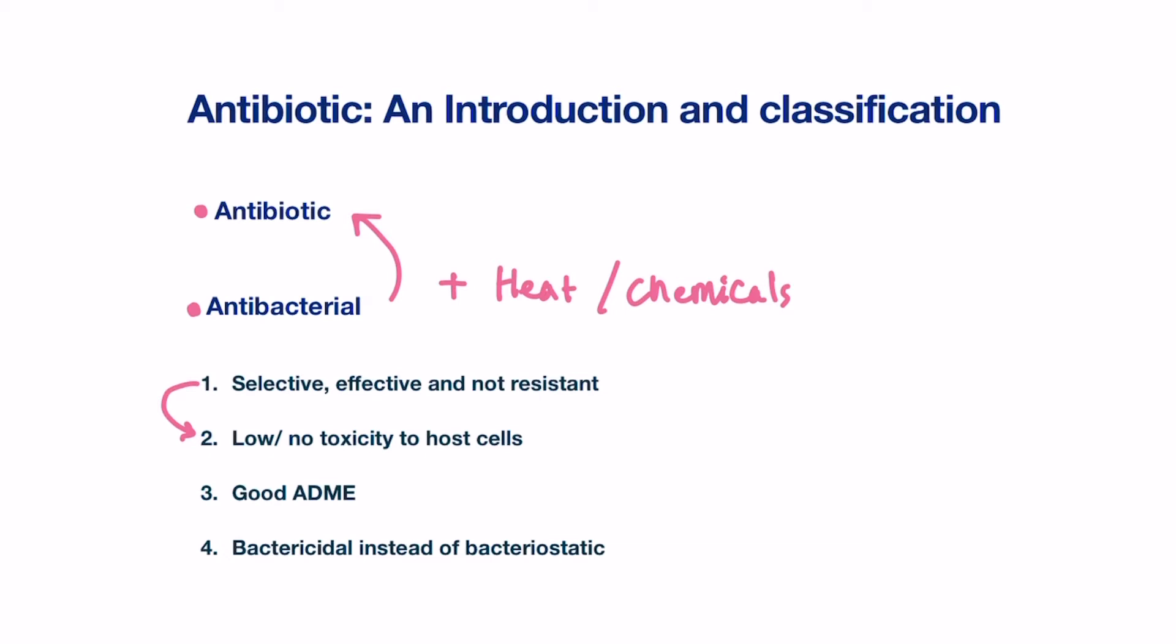Also, it must be effective with high therapeutic index and it should not be resistant. Resistance is a problem we face with antibiotics and it's a problem we need to overcome. Some bacteria and different strains are more developed and have the ability to produce toxins that enable the bacteria to survive in conditions where antibiotics are present.